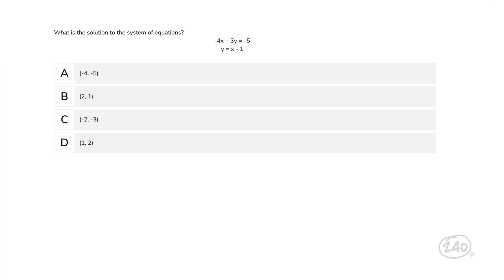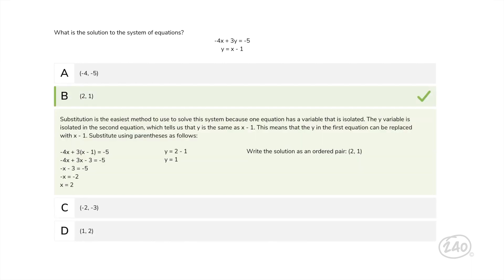Now, our equation is negative 4x plus 3 times the quantity of x minus 1 equals negative 5. If we simplify, we end up with x equals 2. Then, we substitute x in our second equation and y equals 1. So, the correct answer is 2, 1.